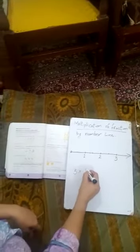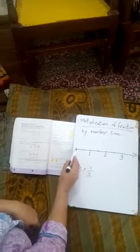For example, I take this example: three times half. I take three times half to show on these number lines.